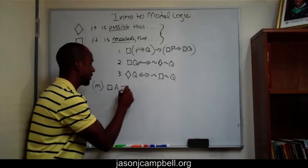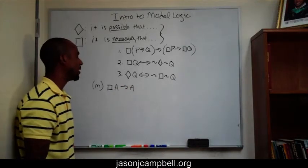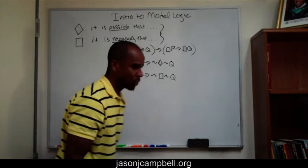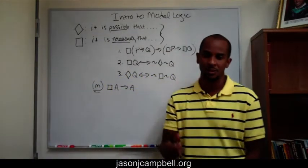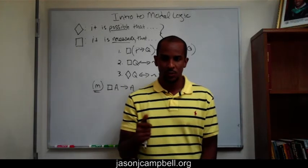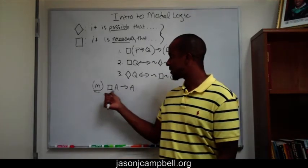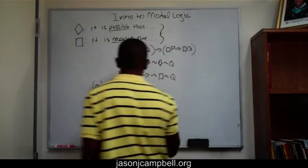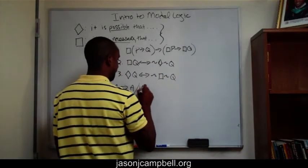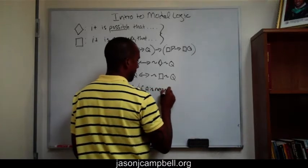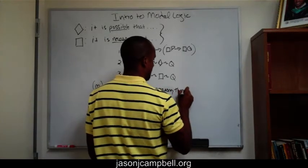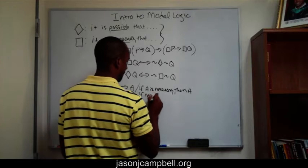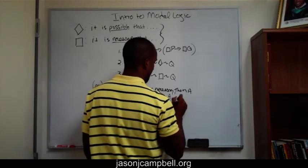Let's look at Axiom M for modal logic. This axiom makes the following claim, and it's pretty basic: if A is necessary, then A. You can word it as 'if A is necessary, then A' or 'if necessarily A, then A.' That's the axiom.